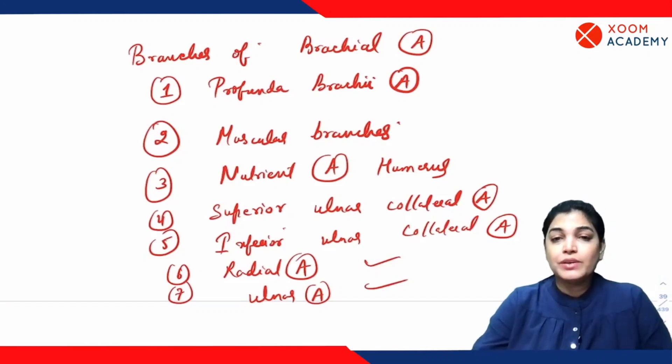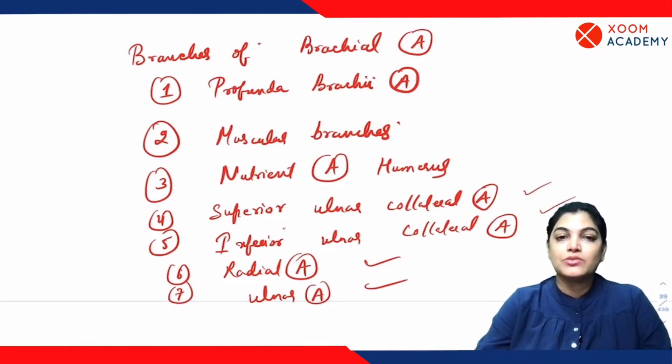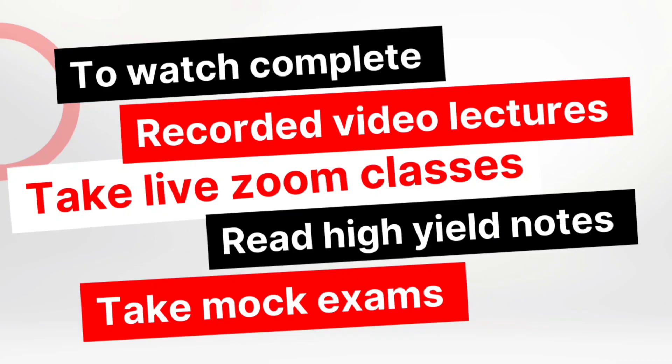The superior and inferior ulnar collateral arteries take part in the formation of the elbow anastomosis. Other branches include the nutrient artery, muscular branches, and the profunda brachial artery.